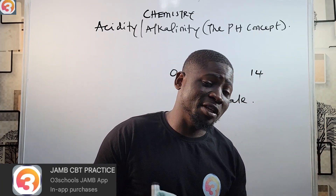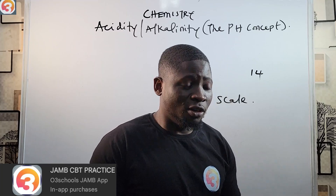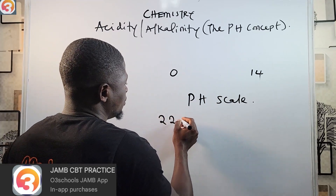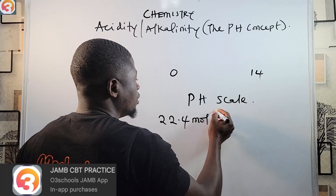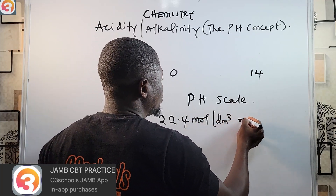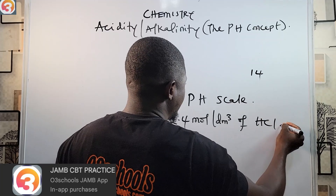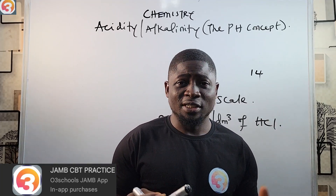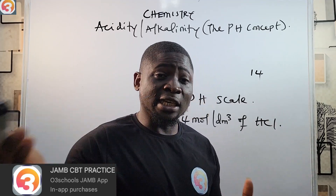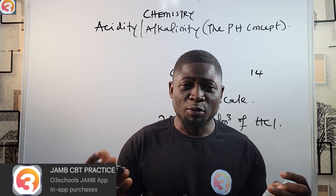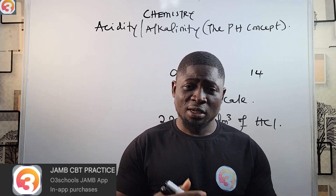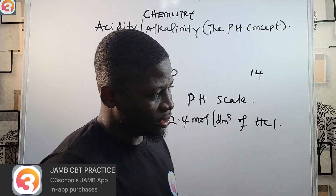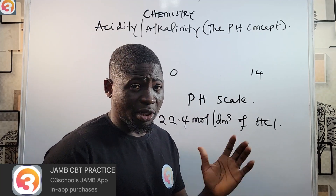For example, look up the pH of 22.4 mol per dm³ of hydrochloric acid if you want to test yourself. In the next episode we're going to do calculations on pH — we'll look for the pH of various substances — so make sure you join us.